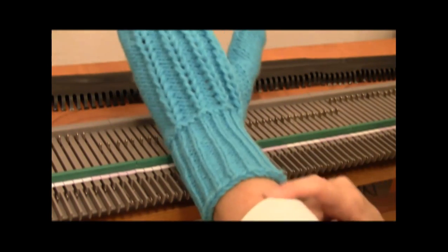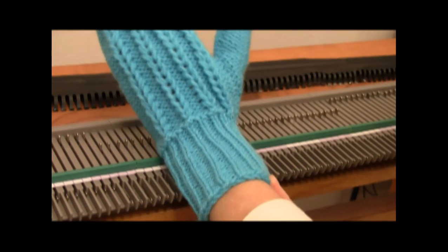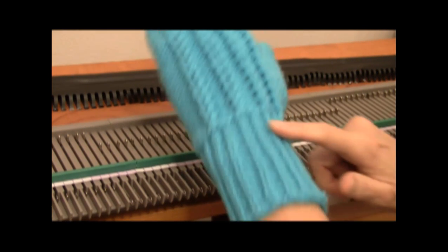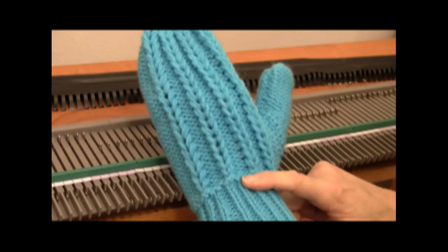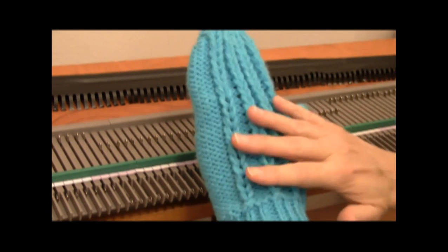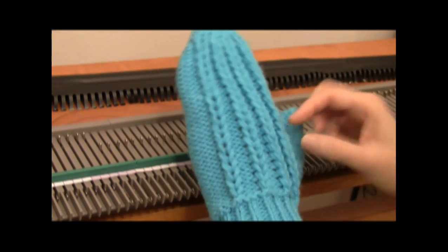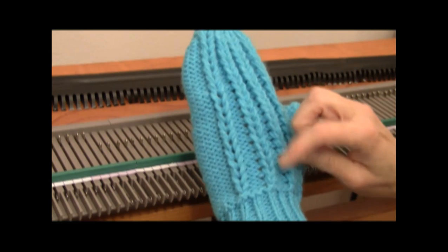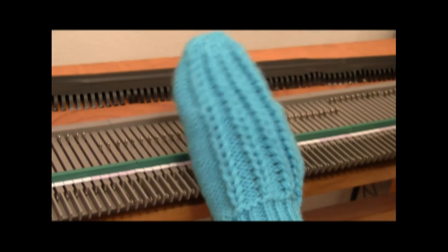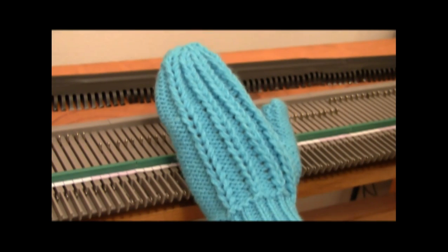You're going to be learning to do a double wrap e-cast-on. You're going to latch up a 1x1 ribbing, and you're going to knit the body of the mitten, and then afterward tool these braids that are the same ones we used on the matching scarf and hat.